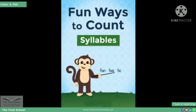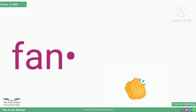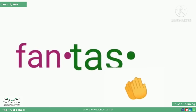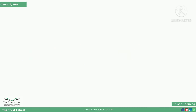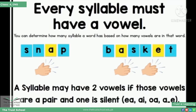There are different ways to count the syllables in a word. The first one is the clap method. For example, for the word 'fantastic', in order to speak this word you have to clap your hands three times. Ek aur method syllables ko count karne ka — number of vowels.